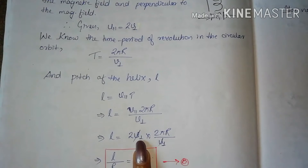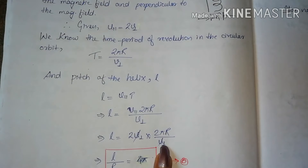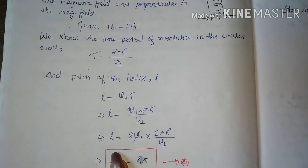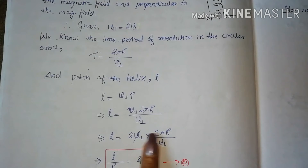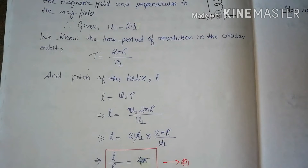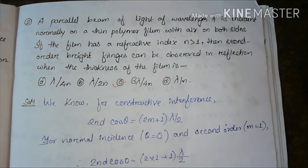The pitch L to the radius R of the helical path equals 4π. The correct option is option B. This question is purely based on the formula; we don't need any very complicated concept. Now let's come to the next question.